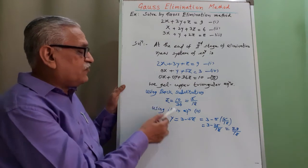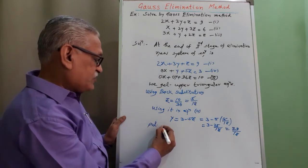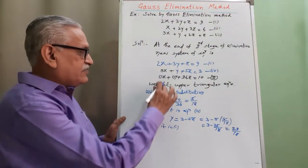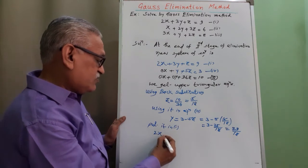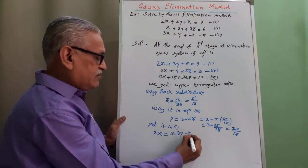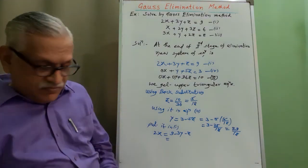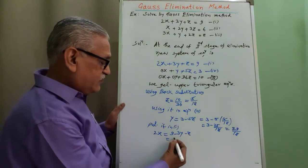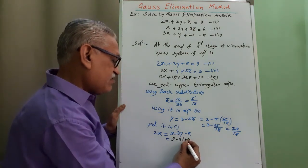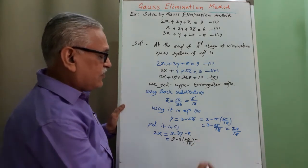Substituting the values of z and y in equation 1, we get the value of x. We get 2x equals 9 minus 3y minus z.